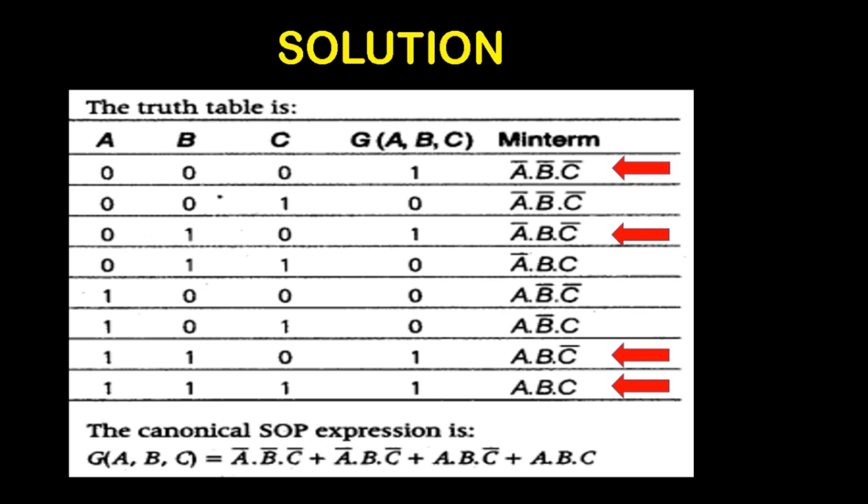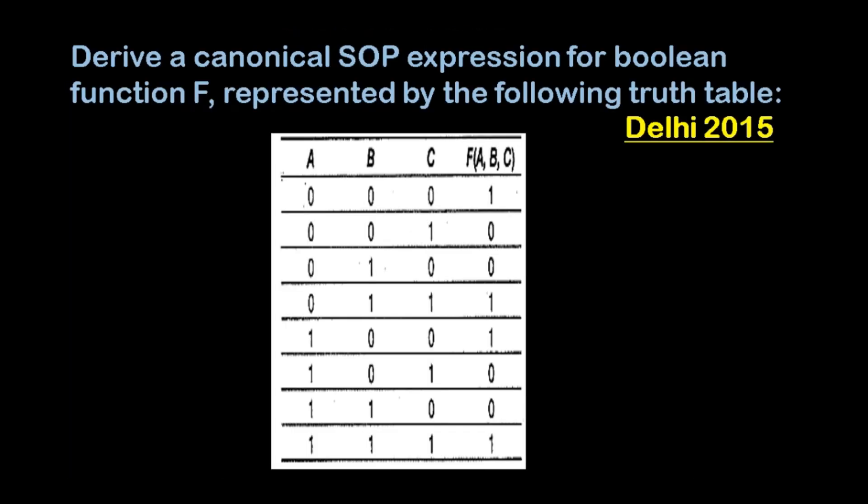We will see the next problem now. Find the canonical sum of product expression for the Boolean function F represented by the following truth table — this is the 2015 paper. The truth table is given with three input combinations A, B, C along with the output column F, and the final output is 1, 0, 0, 1, 1, 0, 0, 1.